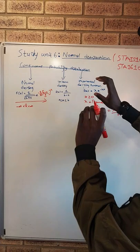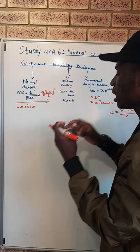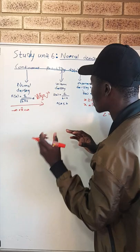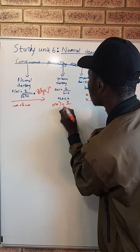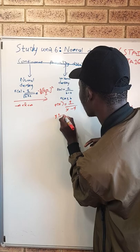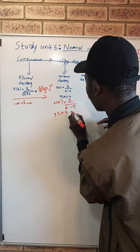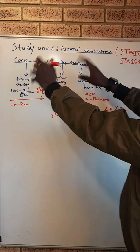Now let's talk about the uniform density function. With the uniform density function, we are talking about a function where maybe we have f(x) equal to one over (b minus y), and it's going to be like y less than or equal to x less than or equal to b. Remember, this one is the basics.